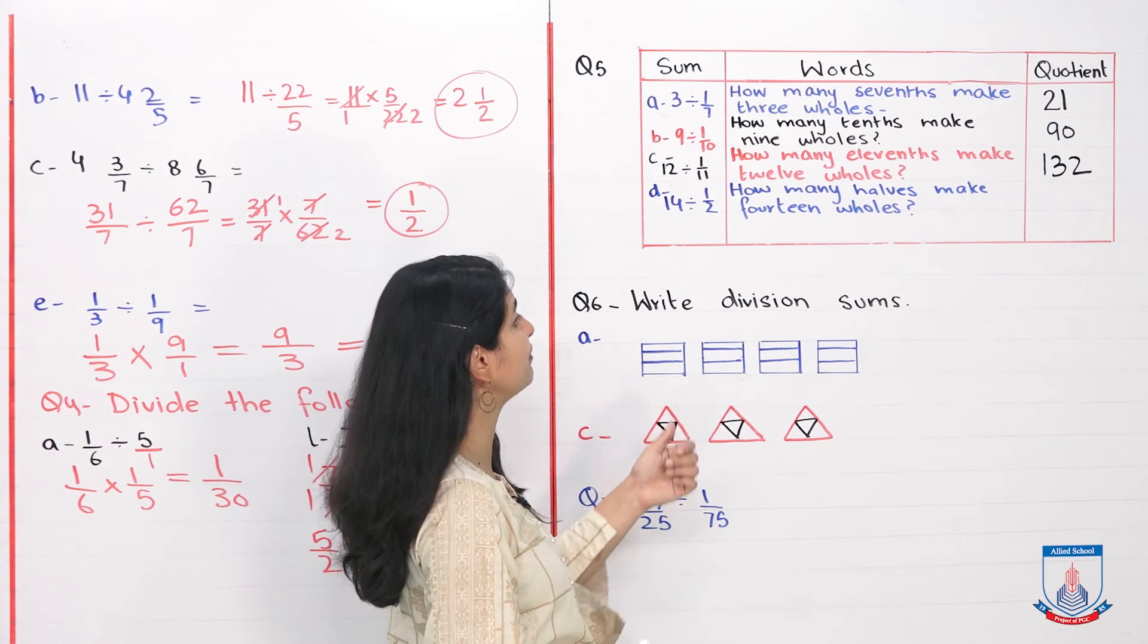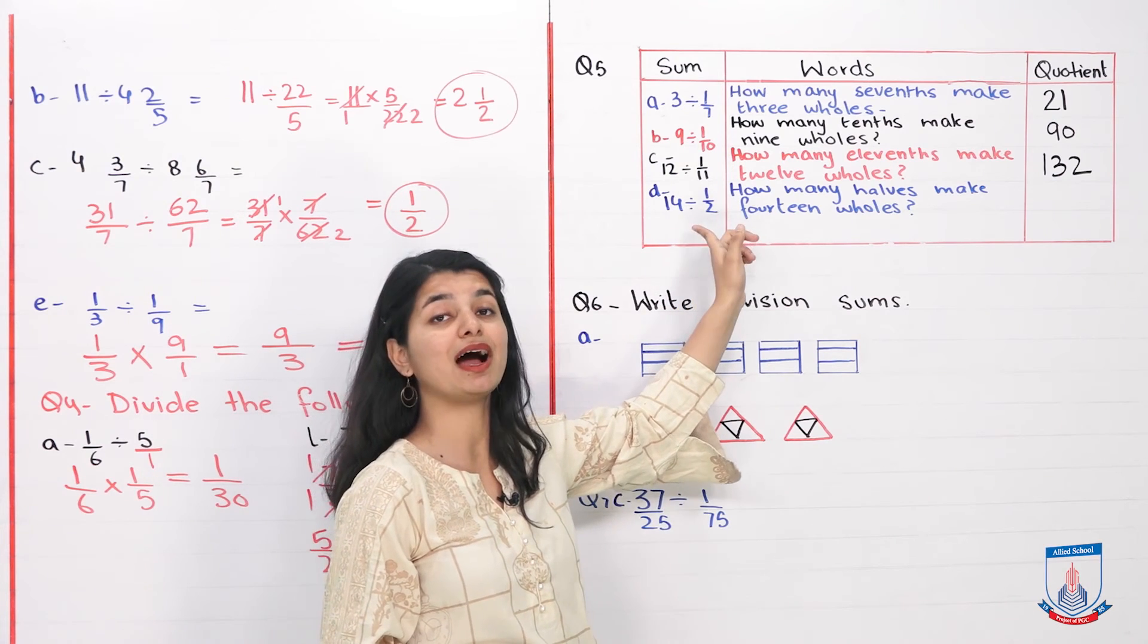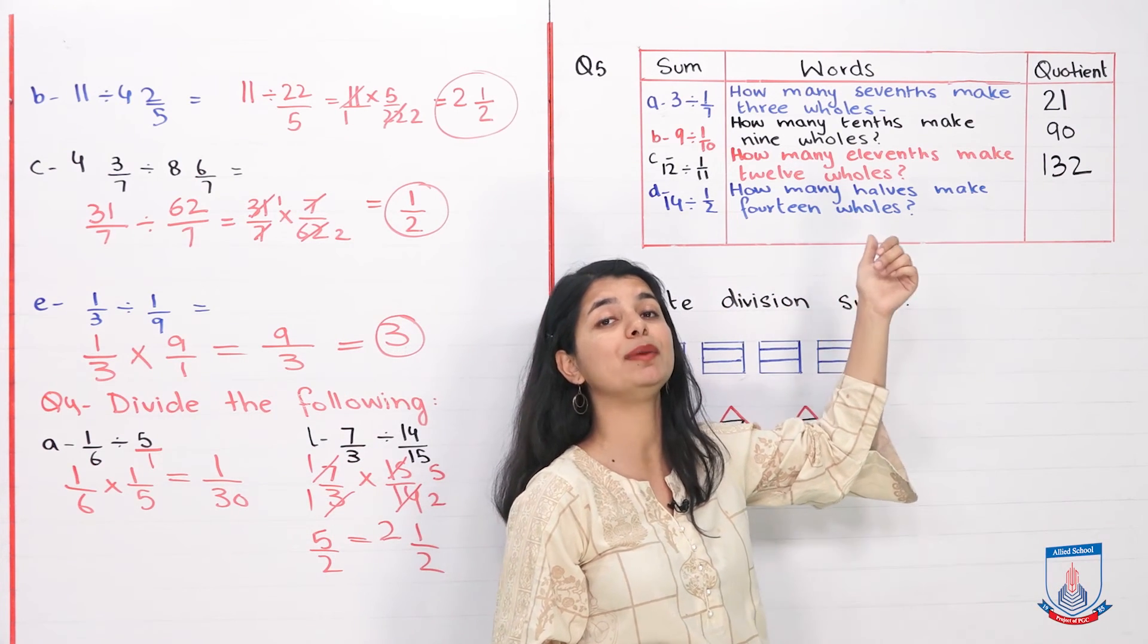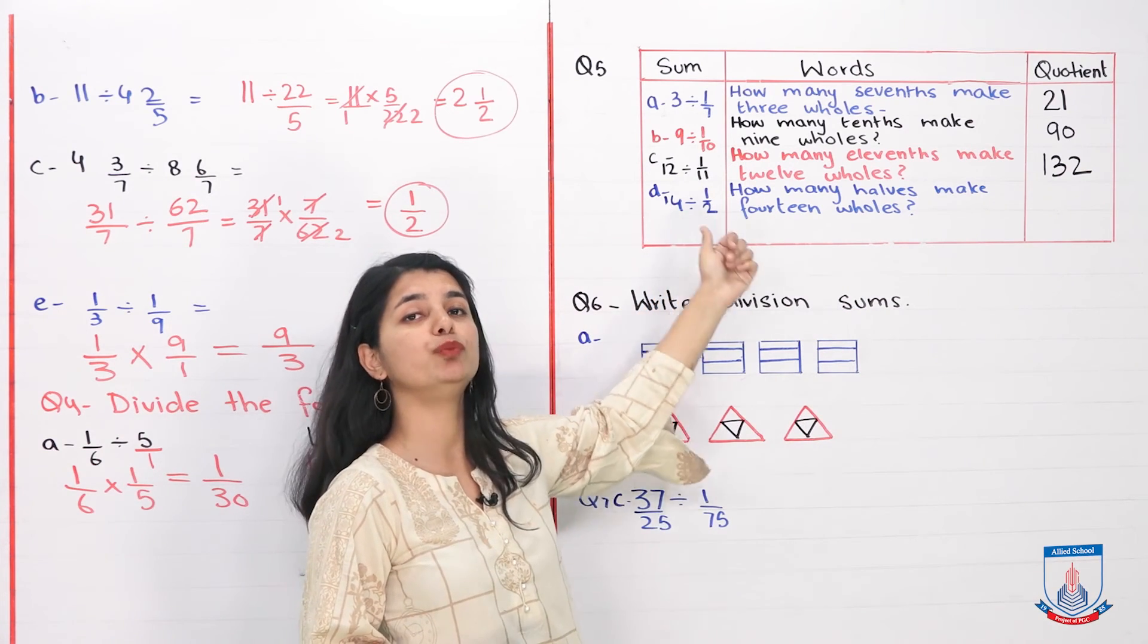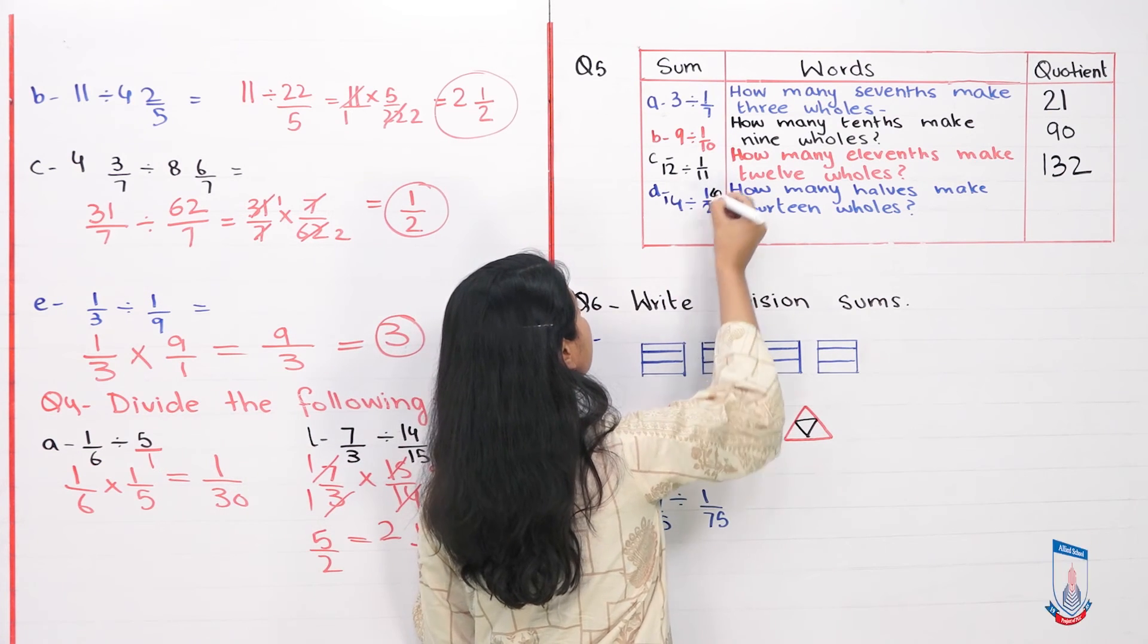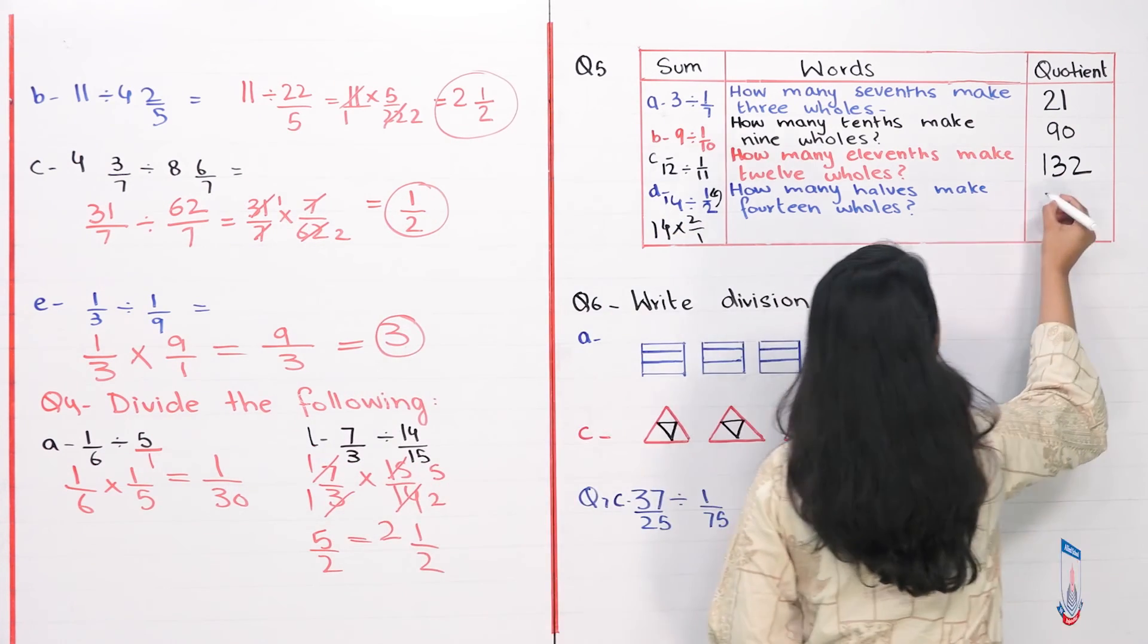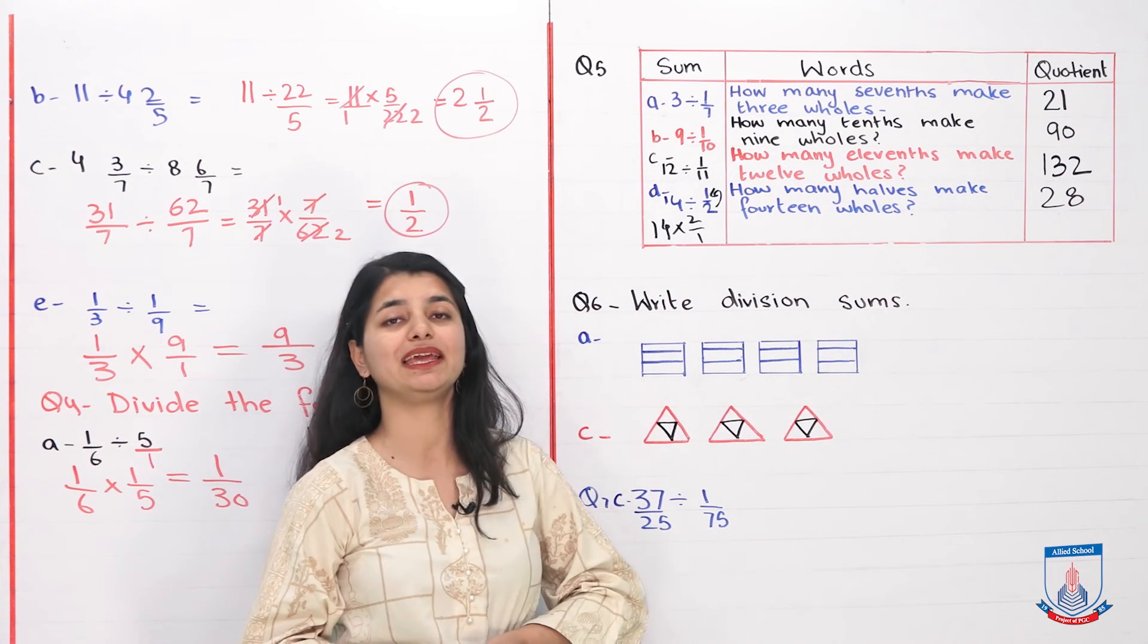Part D: fourteen divided by one over two. One over two we call halves, because it becomes half. How many halves make fourteen wholes? Because it's 14. So what do we do? Fourteen divided by one over two, very easy. You invert two and take it up. This becomes fourteen into two, two by one. Fourteen into two is twenty eight, so your answer is twenty eight and you've already written the word form.